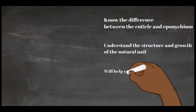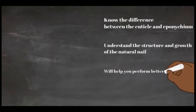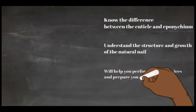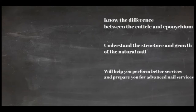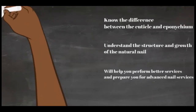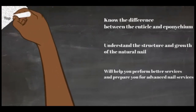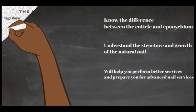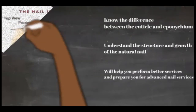That will prepare you for more advanced nail services. All parts of the finger from the tip to the first knuckle are referred to as the natural nail unit. The natural nail itself is technically referred to as the onyx and is composed mainly of keratin. The keratin in natural nails is more durable than the keratin in hair or skin.